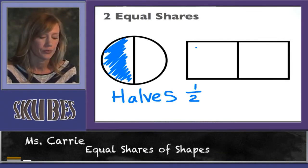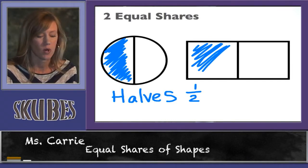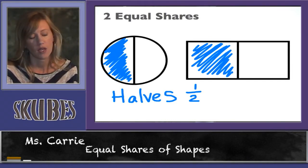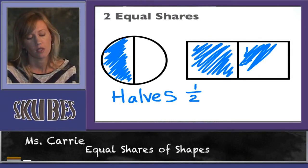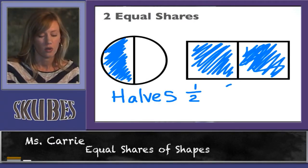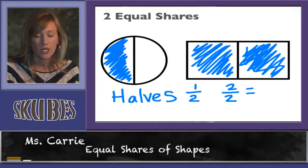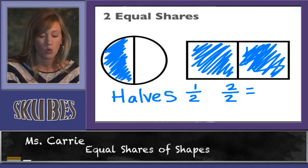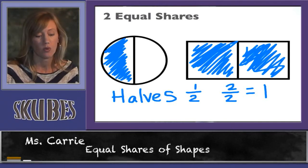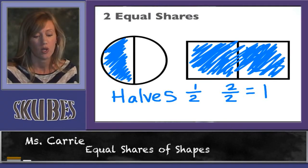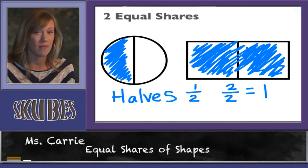Now with the rectangle, if we shade in this one and we shade in this one, we shade in two. Draw a line. The bottom number is how many parts all together out of two, which is actually the same thing as one. Because if you see we colored the whole shape. So two halves is the same thing as one.